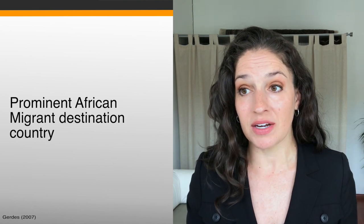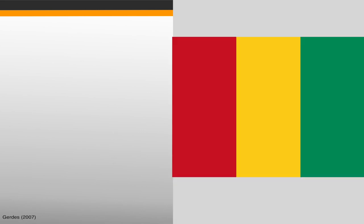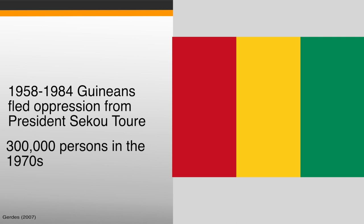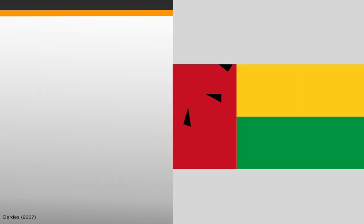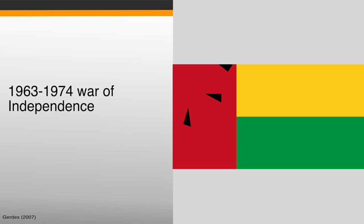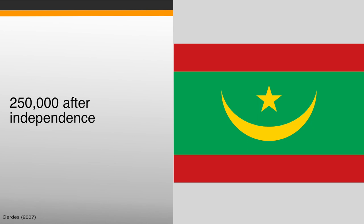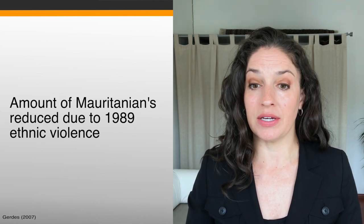Senegalese independence happened in 1960, and Senegal emerged as a prominent African migrant destination. Regarding Guinea, between 1958 and 1984 the influx of Guineans fleeing oppression in their own country rose significantly — roughly 300,000 persons fled to Senegal in the 1970s, though this fell to 45,000 after the previous president's death. Looking at Guinea-Bissau, between 1963 and 1974 the war of independence drove around 75,000 people to Senegal during that war period.